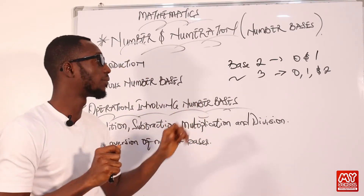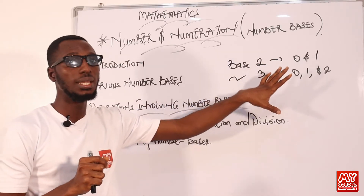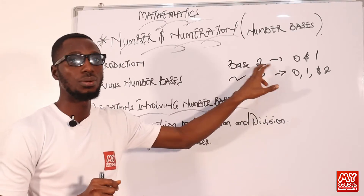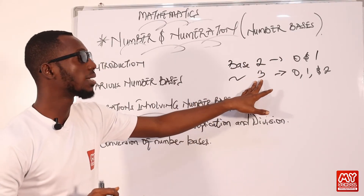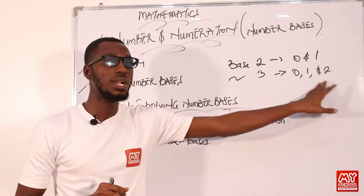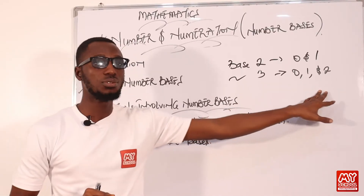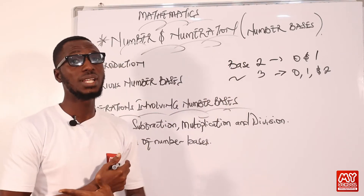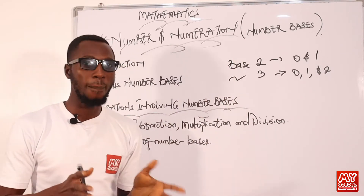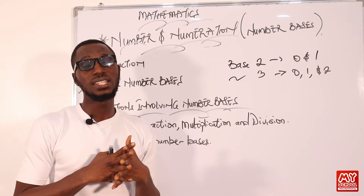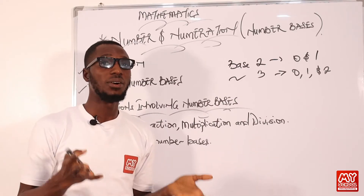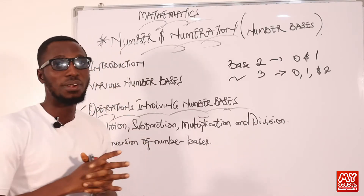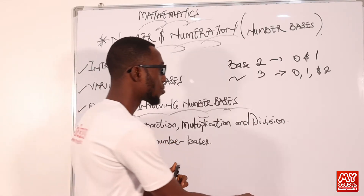You can notice a particular trend: for every base we are working in, the highest digit is one less than the base. For example, in base 3, the highest digit is two — three minus one equals two. In base 5, the highest digit will be four. If we are working in base 7, the highest digit will be six. That is the brief introduction to number bases.